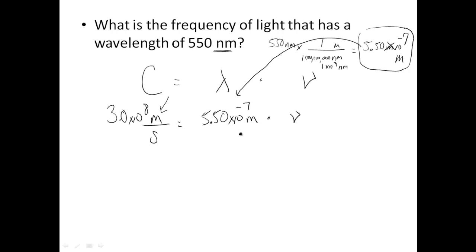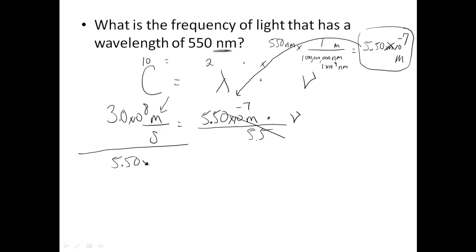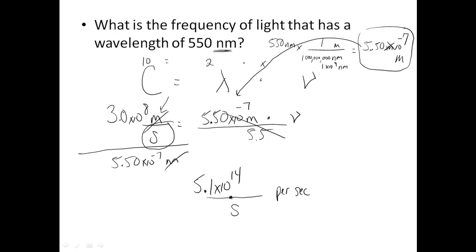Now I can plug that wavelength in. The meters are ultimately going to cancel with the speed of light meters, leaving units for frequency. This is like saying 10 equals 2 times x. Put 10 in first — 3.0 times 10 to the 8th divided by 5.50 times 10 to the negative 7th meters. Meters cancel. You do the math and you're left with 5.1 times 10 to the 14th. You still have seconds on the bottom, so that many times per second. You can write it as per second, seconds negative 1, or hertz — any of those units are fine.